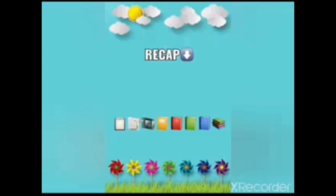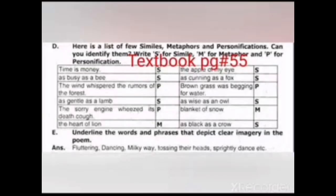After that we have done the collective nouns and the conjunctions. There is a quick recap and we will be able to solve the exercise given at the end of the chapter daffodils at page number 55 of your textbook. There is activity D and activity E related to the figure of speech.